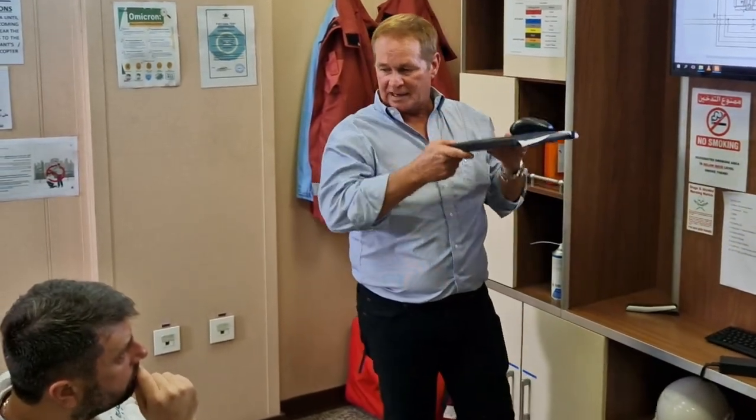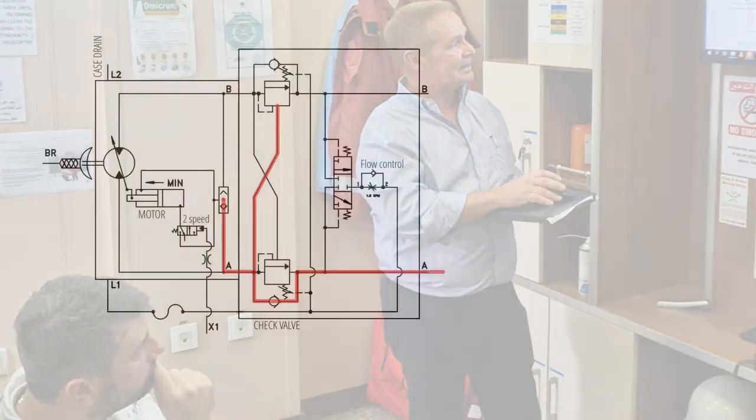This is the dynamic brake for this system. So earlier I mentioned when we're going down, I'm controlling the descent by forcing the pressure across the counterbalance valve. The flow coming out of the motor hits the counterbalance valve, then the pressure is reduced right at the counterbalance valve.